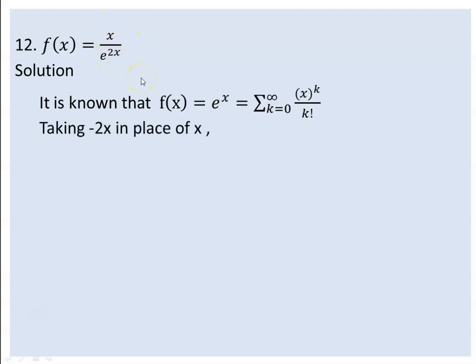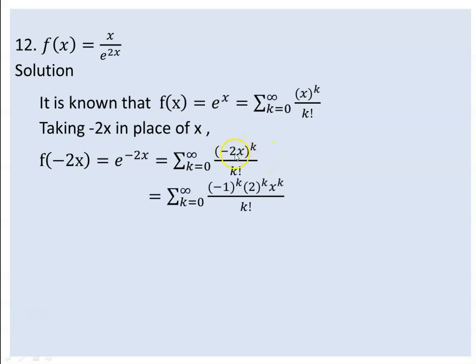We have x times e to the power of minus 2x. Taking minus 2x in place of x, e to the power of minus 2x equals the summation of minus 2x to the power of k over k factorial, which equals the summation of negative 1 to the power of k times 2 to the power of k times x to the power of k over k factorial.